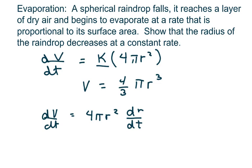We can say that we set it proportional - we have k times 4πr² equals 4πr² times the derivative of r with respect to t.